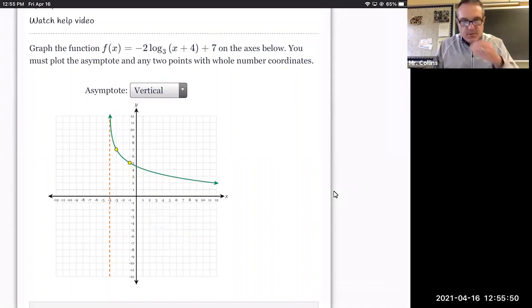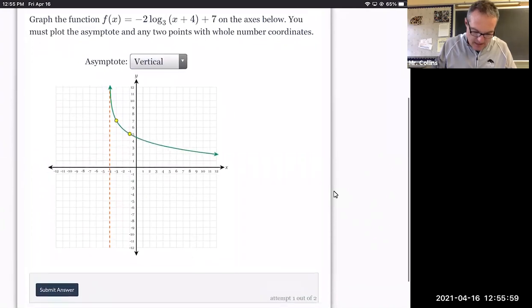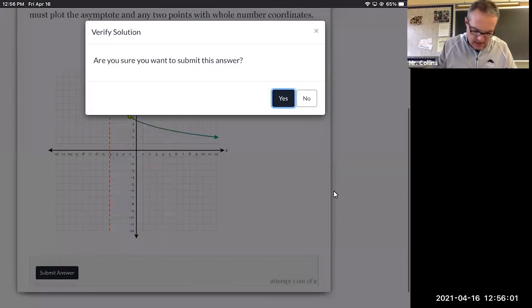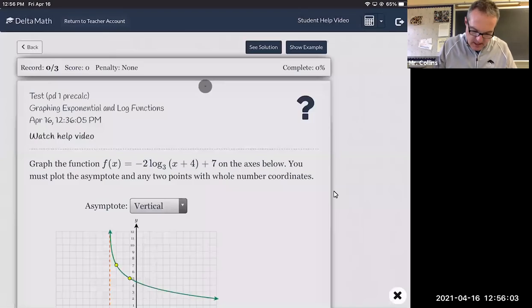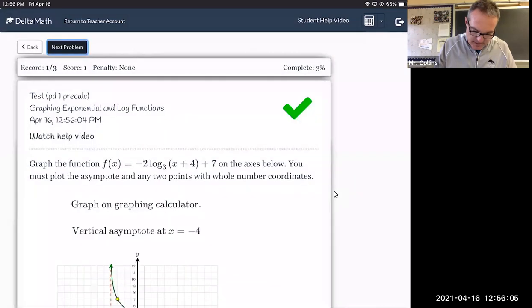Now the base is three, we would expect an increasing function, but the negative in front flips it upside down. So that's why it's a decreasing function. And I think that should be enough to get us an answer here. So if I hit submit, I hit yes, I got it correct.